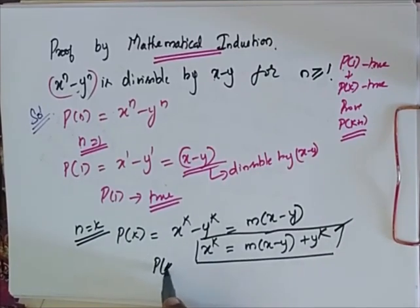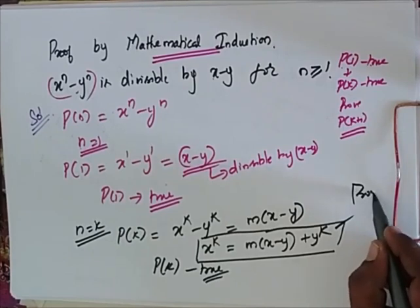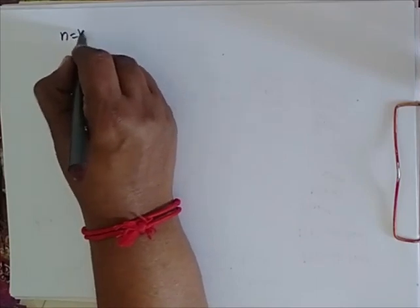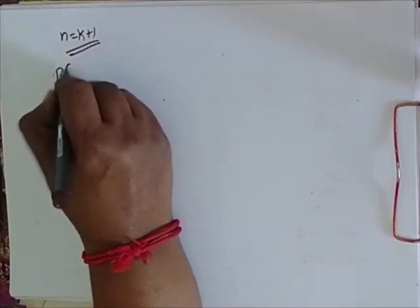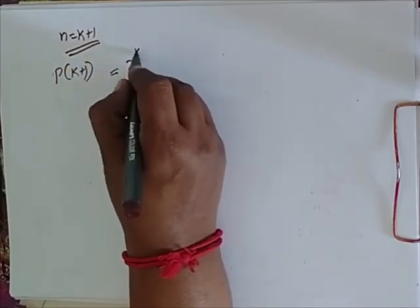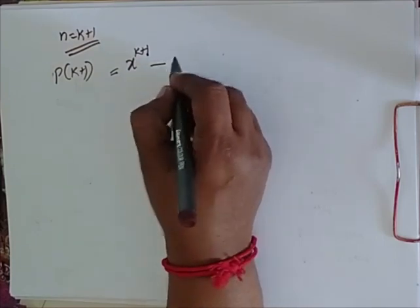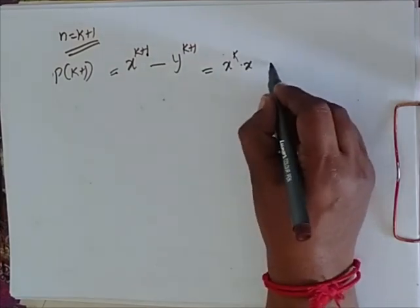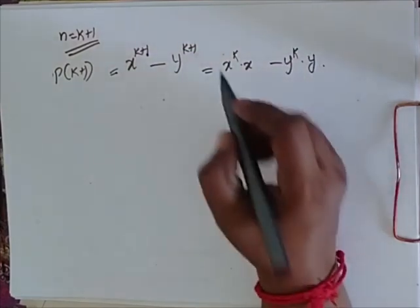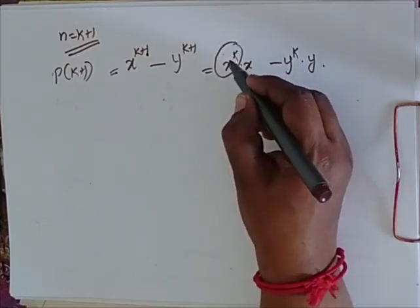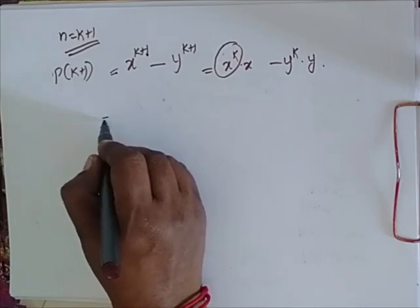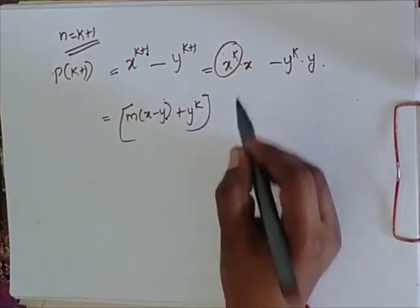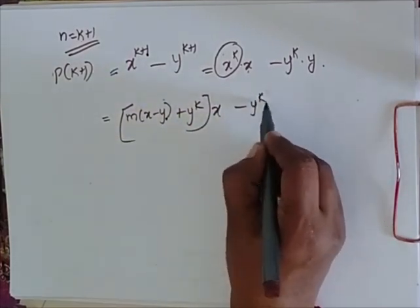So it is true for P of k also. Now we have to prove for P of k plus 1. My n is equal to k plus 1. So my P of k plus 1 is equal to x power k plus 1 minus y power k plus 1. This I write as x power k into x minus y power k into y. Now I have found x power k in terms of y power k, so I am going to replace that: m into x minus y plus y power k, into x minus y power k into y.